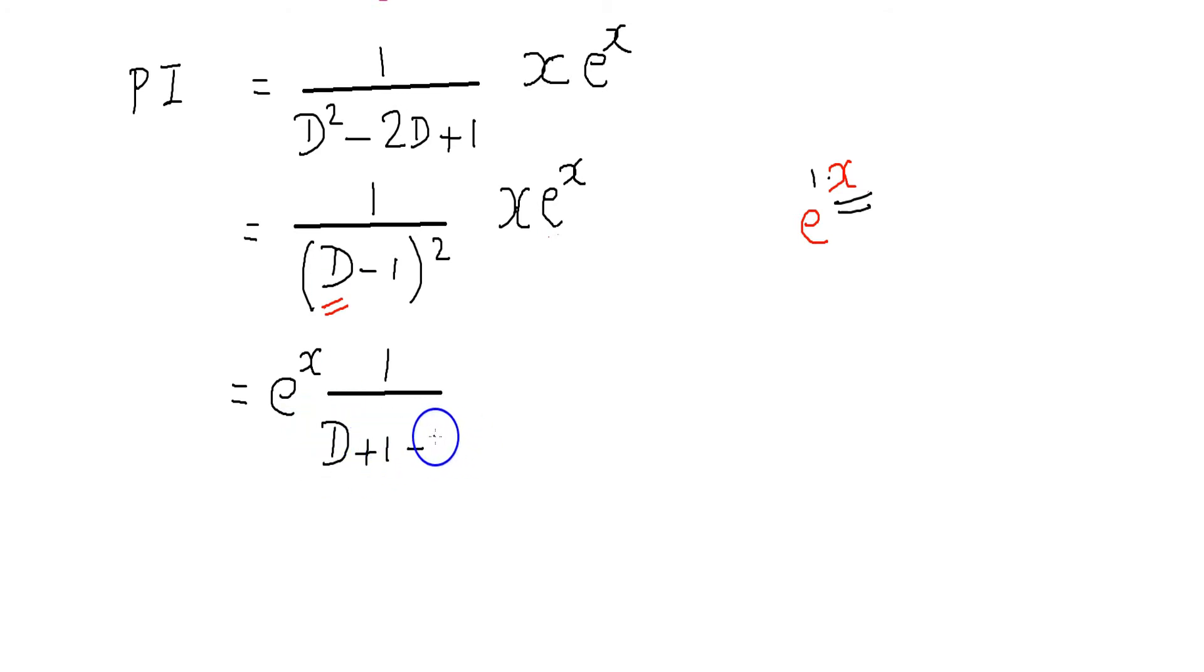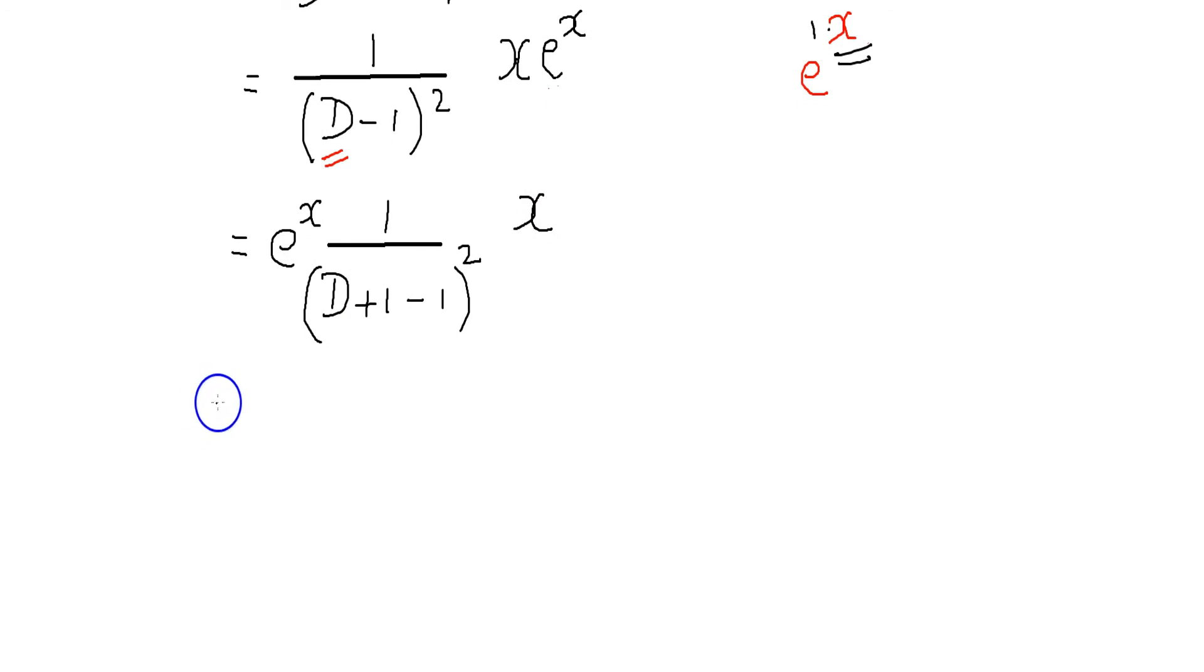We get (D + 1 - 1)² on x, which is equal to e^x times 1/(D²) times x.